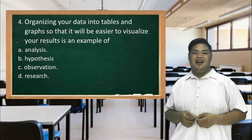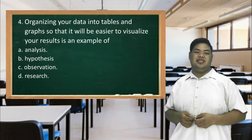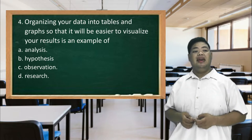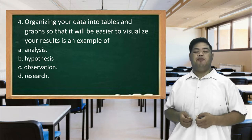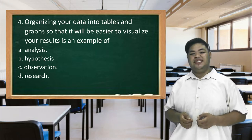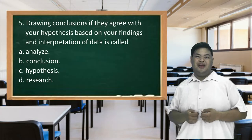Number 4. Organizing your data into tables and graphs so that it will be easier to visualize your result is an example of: A. Analysis. B. Hypothesis. C. Observation. D. Research.